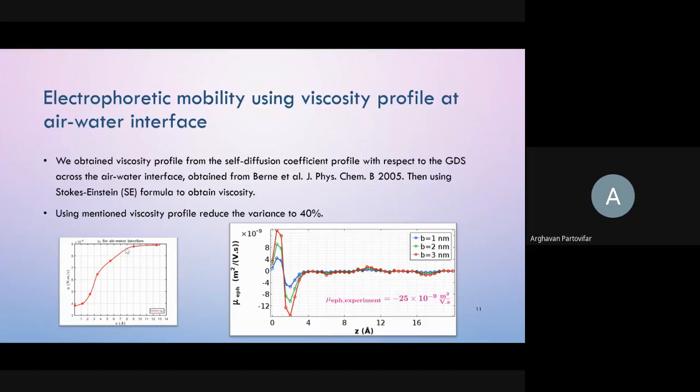Across the air-water interface, viscosity varies from somewhat around zero at air phase to one millipascal second at water phase. Thus the viscosity alters remarkably across the interface between a few angstroms where the charge profile is also negative in that region. We intend to obtain viscosity profile across the interface from the self-diffusion coefficient profile obtained from Bernard's paper, then using Stokes-Einstein formula to obtain viscosity. Using this viscosity profile in the model, the minimum value of electrophoresis mobility for slip length three nanometers reaches to minus sixteen times 10 to the power minus nine, that is 20 percent closer to the experiment. It shows that viscosity profile has a crucial role in our results.